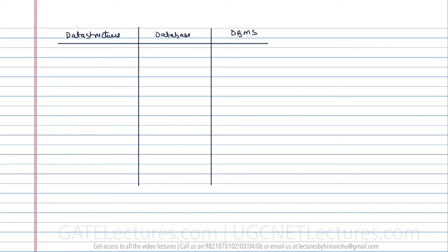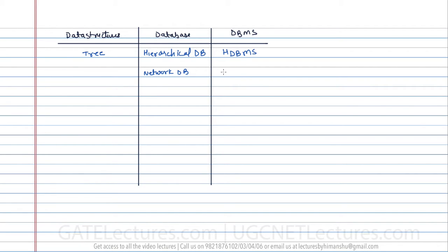We have different types of data structures. If we have a hierarchical data structure, this is called HDBMS or hierarchical database, and the underlying data structure used is trees. Then we have a network data structure, and the network DBMS is also called NDBMS, where the underlying data structure used is a graph.